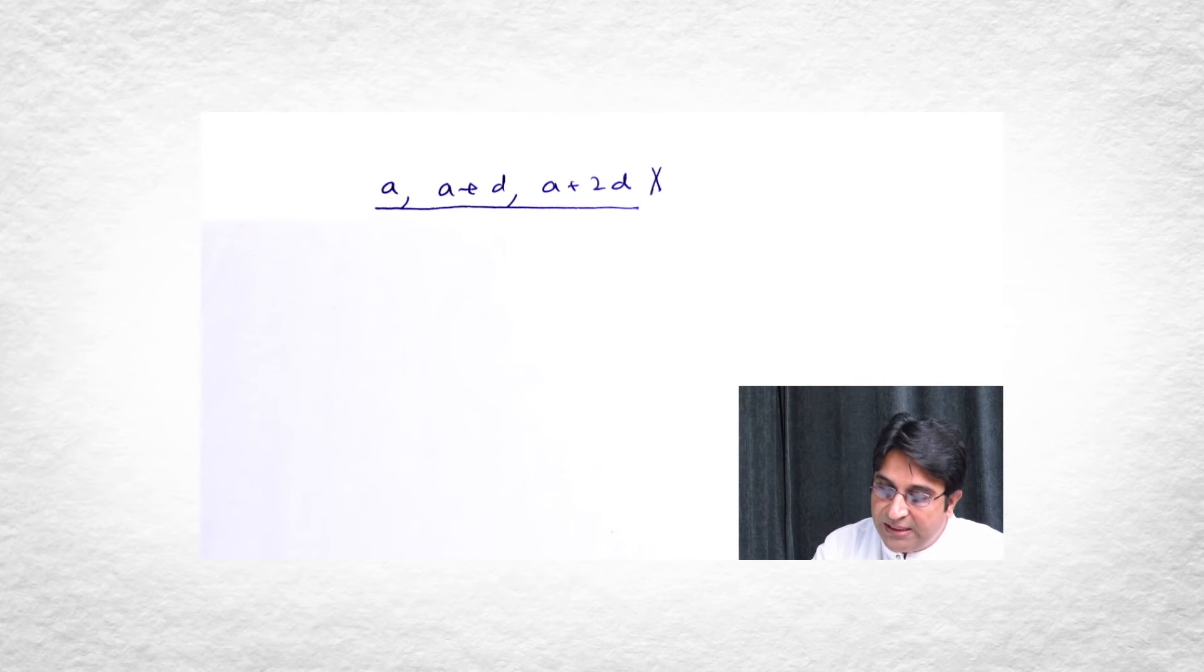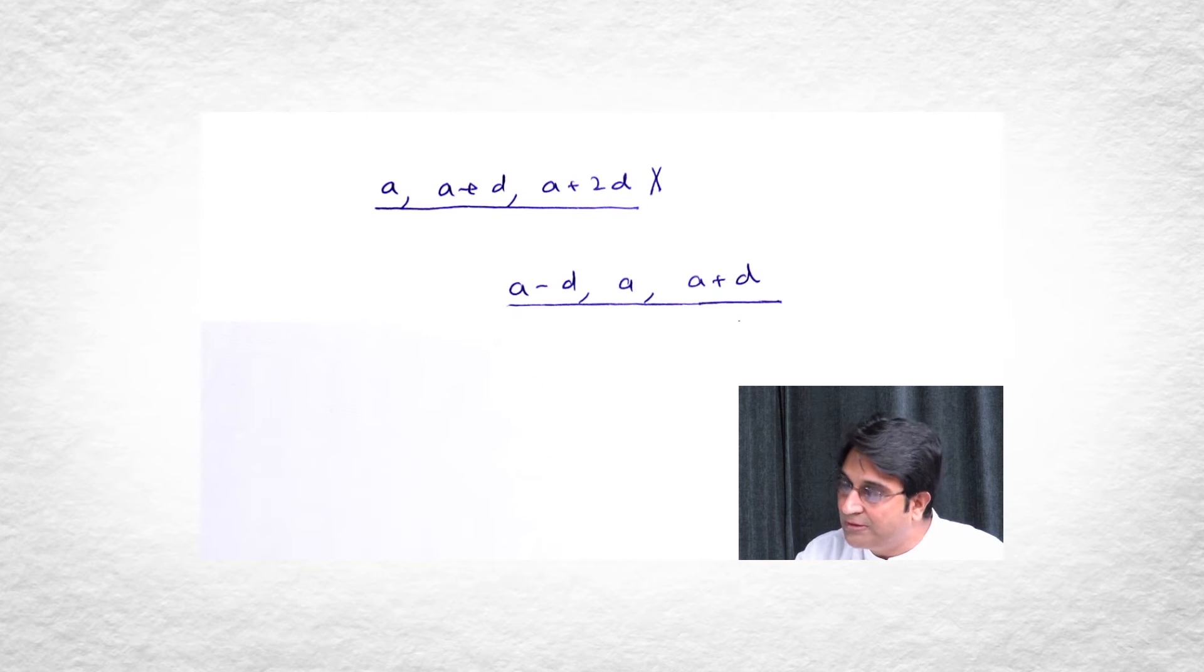So let us look at this problem once more. The problem had set the sum of three consecutive numbers. And the key thing was to realize that if you take the three consecutive numbers as a, a plus d and a plus 2d, the solution won't be very elegant. So what do you do? You take the three consecutive terms as a minus d, a and a plus d.